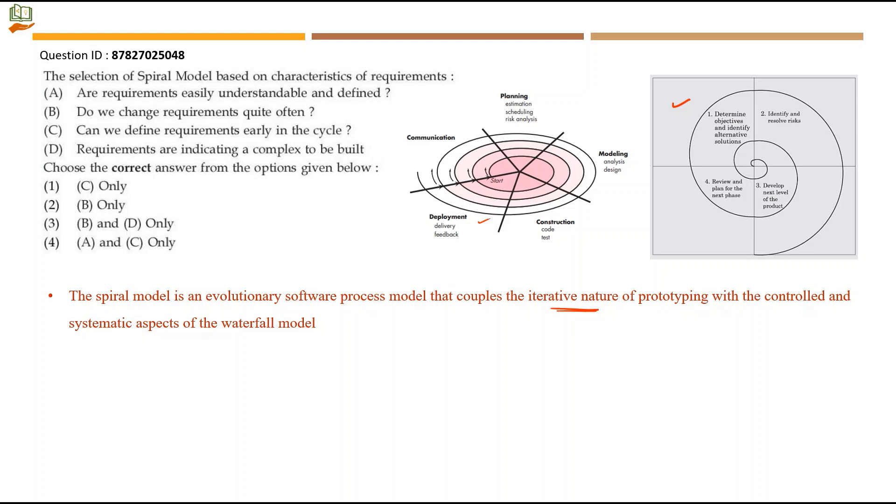Are requirements easily understandable and defined? Here we are determining objectives and identifying alternative solutions, and it is not about the understanding or definition of requirements. So A is not relevant. Next, do we change requirements quite often? When we have changing requirements, definitely we need a spiral model because it comes to the same stage again and again. It happens in an iterative way. So B can be included.